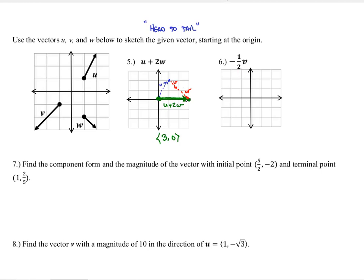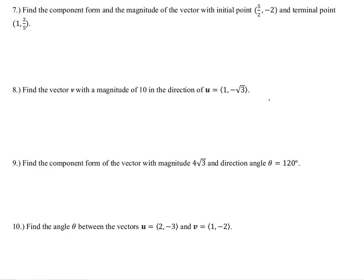For number six we have negative one half v. Vector v from the origin goes left two and down two. Negative one half means the exact opposite direction and only half as far, so instead of going left and down it goes right and up, only half the distance. That is negative one half v. A lot of this vector stuff just makes sense if we know our right triangle trig.